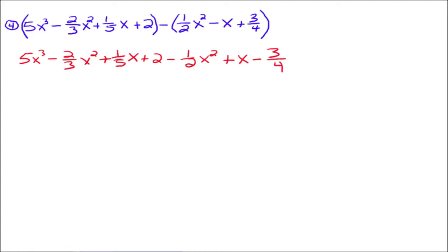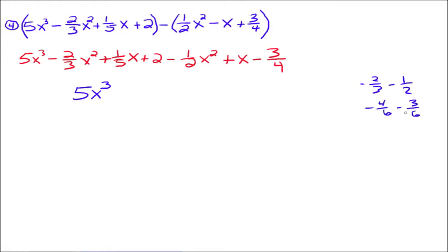Negative 1 times negative x goes to a positive x, and negative 1 times 3 fourths goes to negative 3 fourths. So we put that line in first, then combine like terms. 5x cubed has nothing else to combine with, so 5x cubed. For negative 2 thirds x squared and negative 1 half x squared, we do negative 2 thirds minus 1 half — the LCD is 6, so negative 4 sixths minus 3 sixths goes to negative 7 sixths. So we have minus 7 sixths x squared.